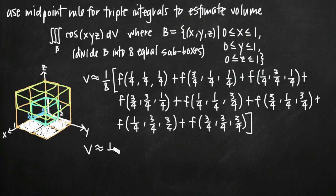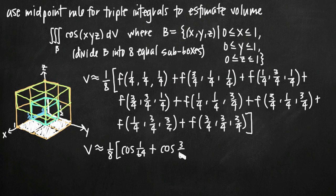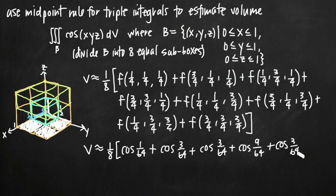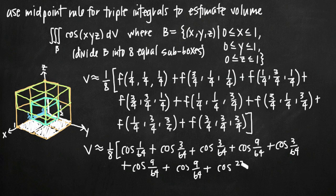Volume is approximately equal to 1/8 times the sum of the function evaluated at all 8 midpoints. Plugging into cosine of x·y·z: f(1/4,1/4,1/4) = cos(1/64); f(3/4,1/4,1/4) = cos(3/64); f(1/4,3/4,1/4) = cos(3/64); f(3/4,3/4,1/4) = cos(9/64); f(1/4,1/4,3/4) = cos(3/64); f(3/4,1/4,3/4) = cos(9/64); f(1/4,3/4,3/4) = cos(9/64); f(3/4,3/4,3/4) = cos(27/64). We add these all together and multiply by 1/8.